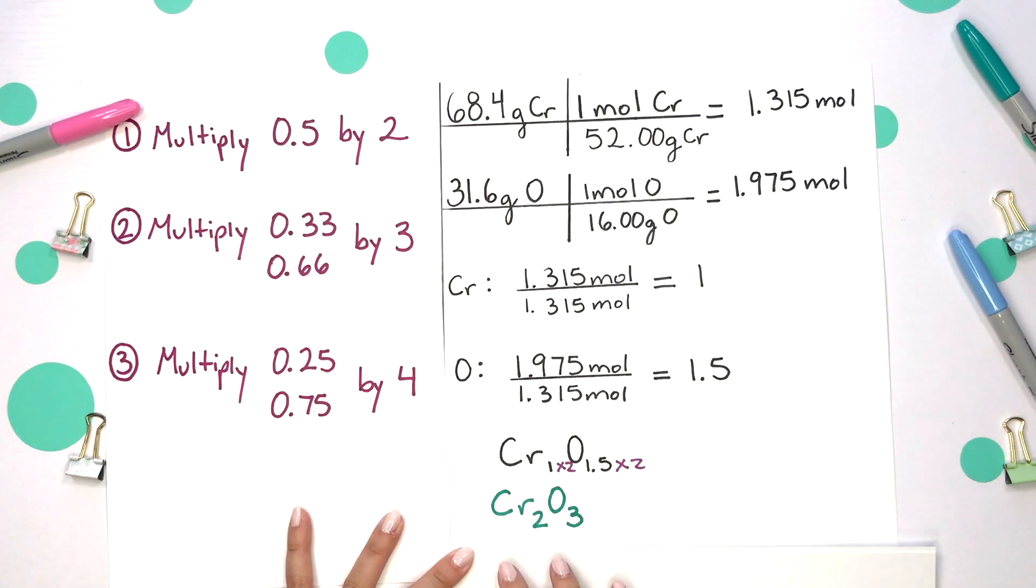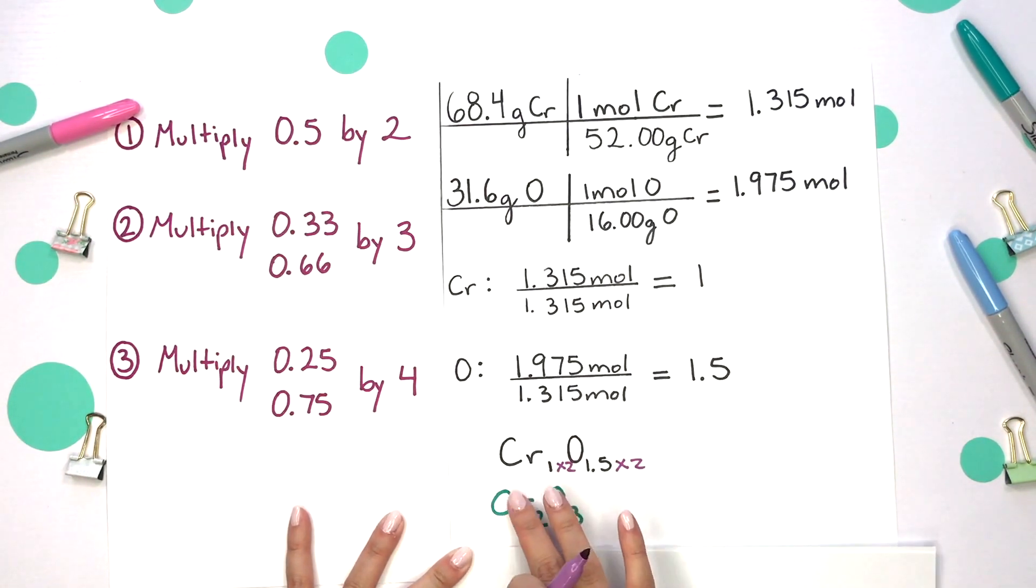So our final answer for our empirical formula would have been 1 times 2, which gives us 2 chromium, and 1.5 times 2, which gives us 3 oxygen. This is our empirical formula.